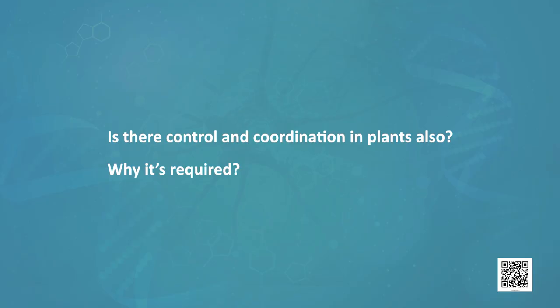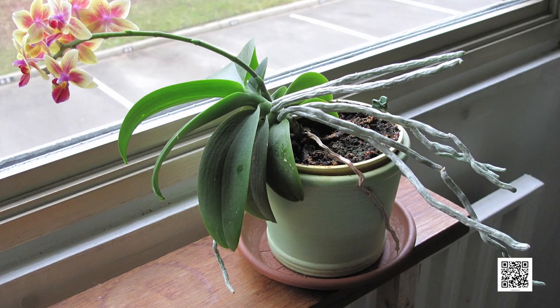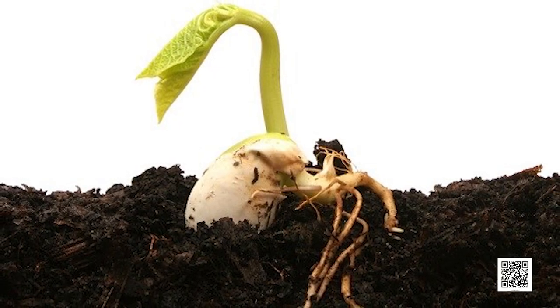Yes, plants show responses. Now the question arises: is there control and coordination in plants and why is it required? Think about the growth in plants. Seeds do not grow when kept in boxes in your kitchen. A seed starts germinating in favorable conditions only. The roots go down into the soil and the shoot grows upward. The plant grows to a maximum and then growth stops. There are seasonal plants, flowers, and fruits that can be seen in particular seasons only. So obviously there is a proper system in plants to control all these activities.